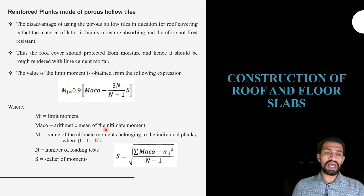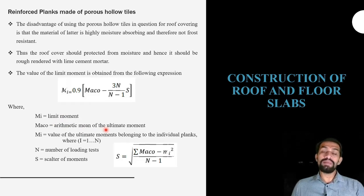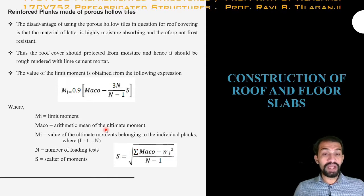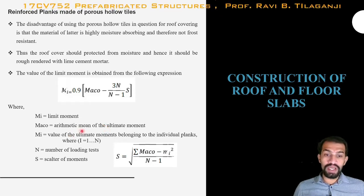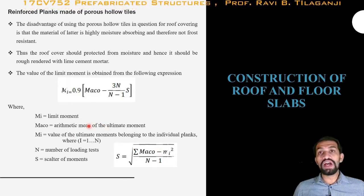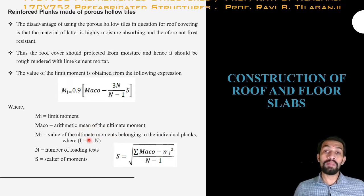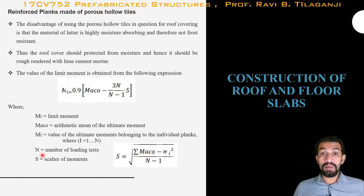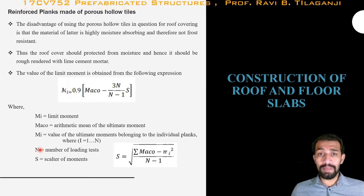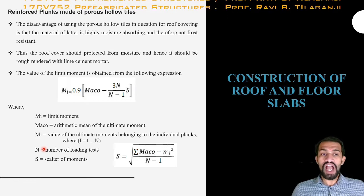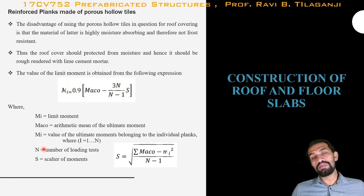In this formula, Mi is the limiting moment and Maco is the arithmetic mean of the ultimate moment — the summation of all moments occurring at edges or mid-span under simply supported or fixed conditions. The second Mi in the s-equation refers to the ultimate moment of individual planks, where i equals 1 to n. n is the number of load tests conducted, and s is the scatter of moments, giving the limiting moment for reinforced planks made of porous hollow tiles.